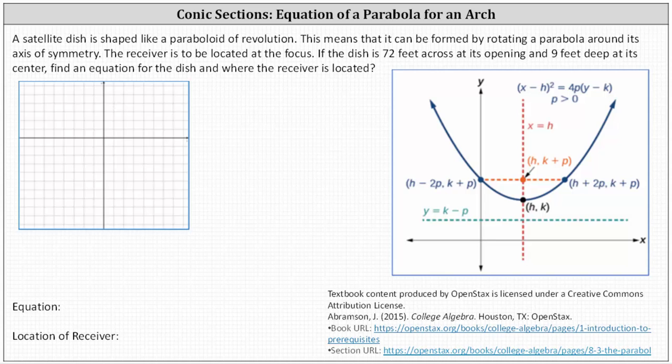A satellite dish is shaped like a paraboloid of revolution. This means it can be formed by rotating a parabola around its axis of symmetry. The receiver is located at the focus. If the dish is 72 feet across its opening and 9 feet deep at its center, we're asked to find an equation for the dish and where the receiver is located.